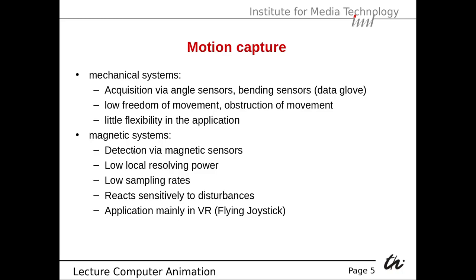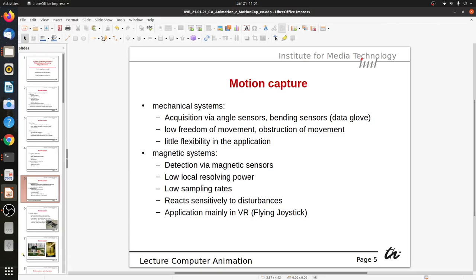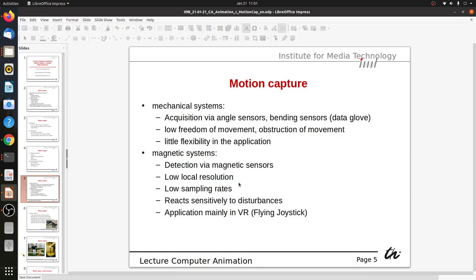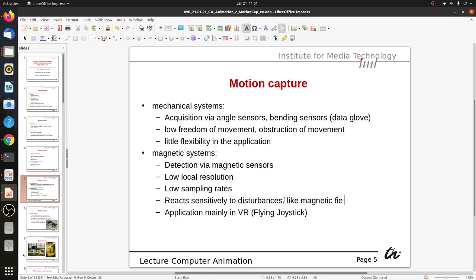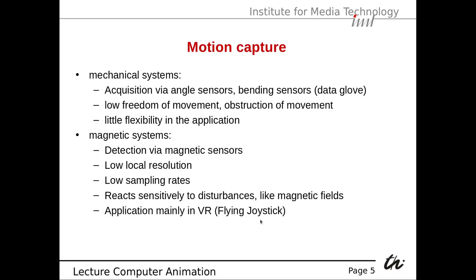Magnetic systems have less friction. Detection is done by magnetic sensors, but there is low local resolution and also a low sampling rate. The system reacts sensitively to disturbances like magnetic fields from other sources. Applications are mainly in virtual reality, for instance the virtual joystick.